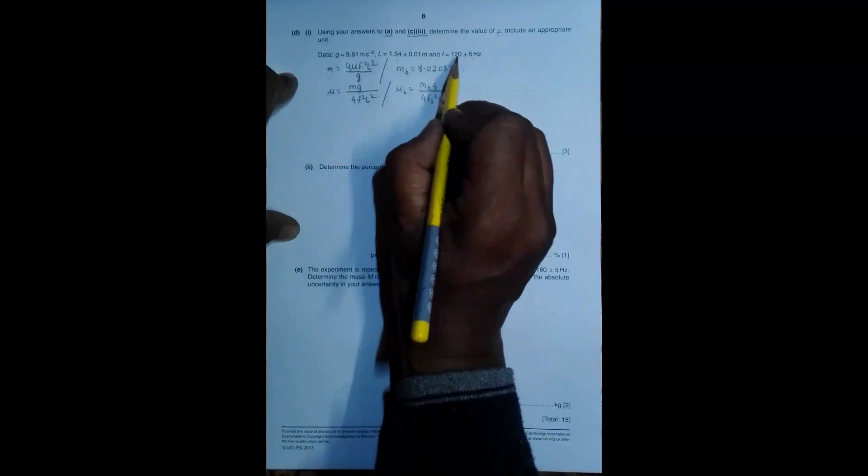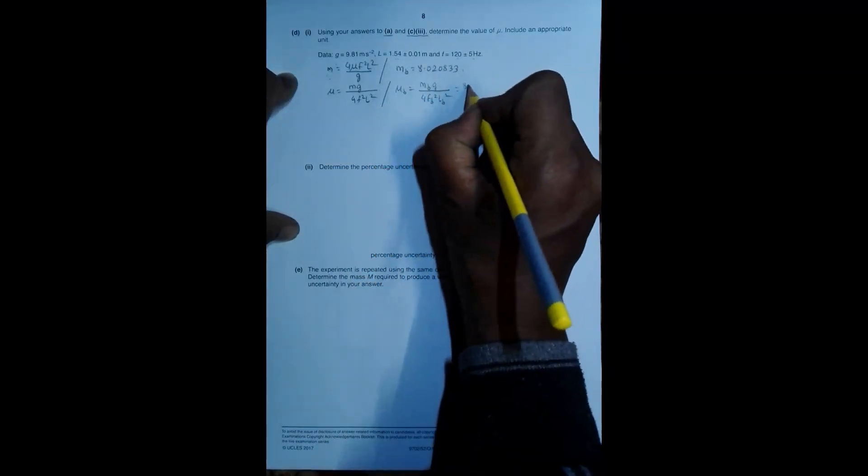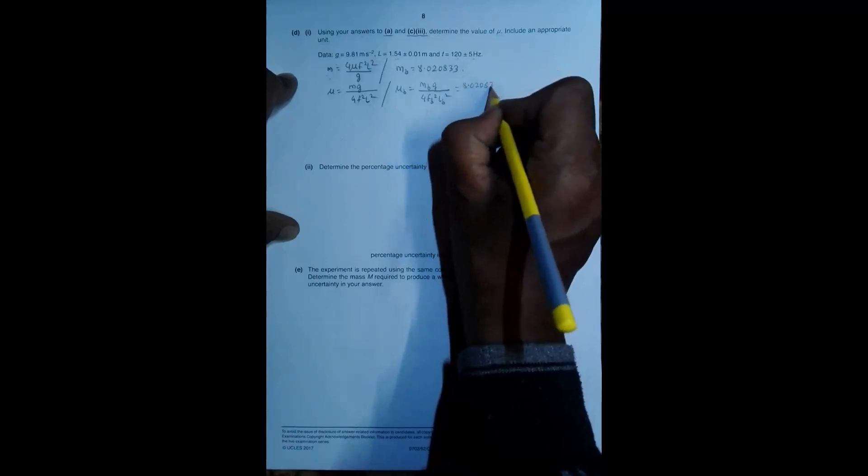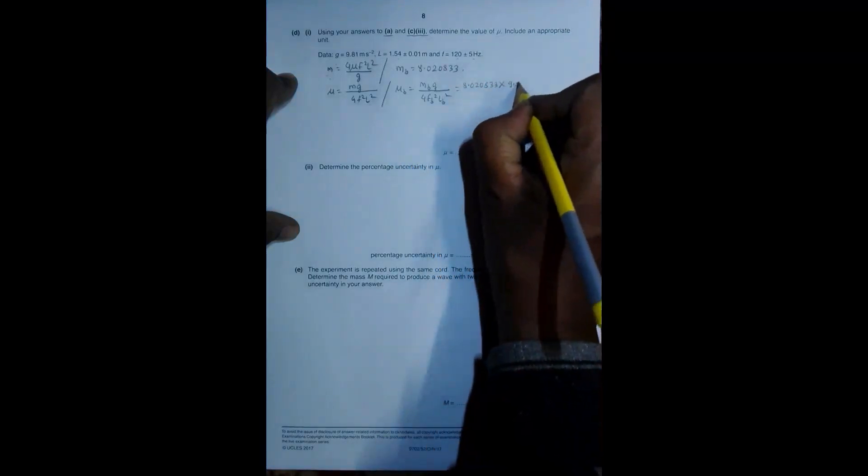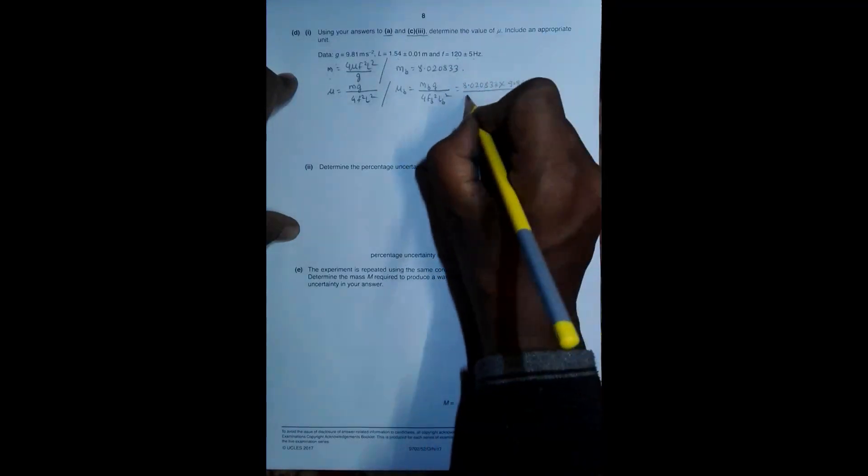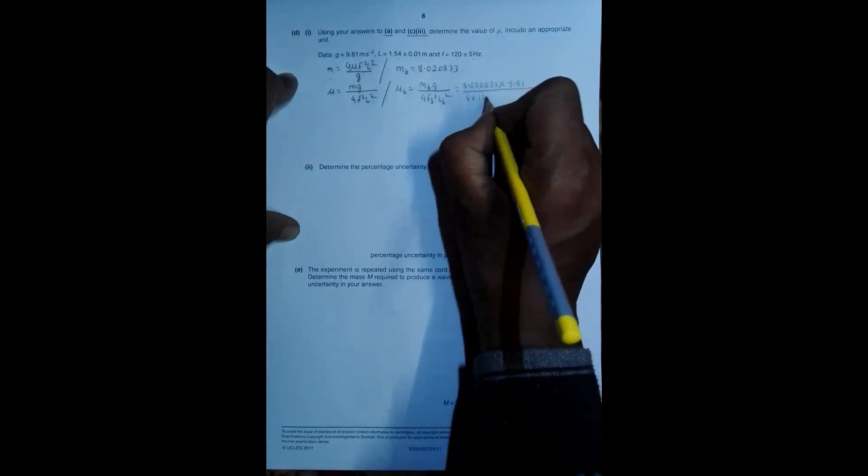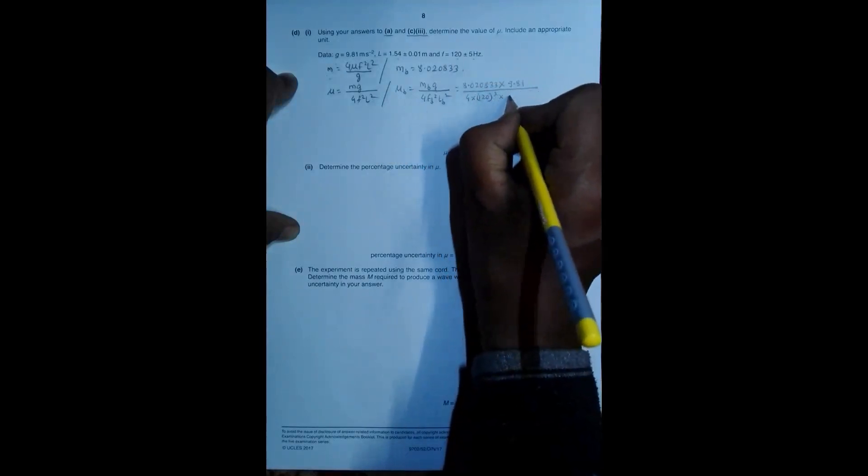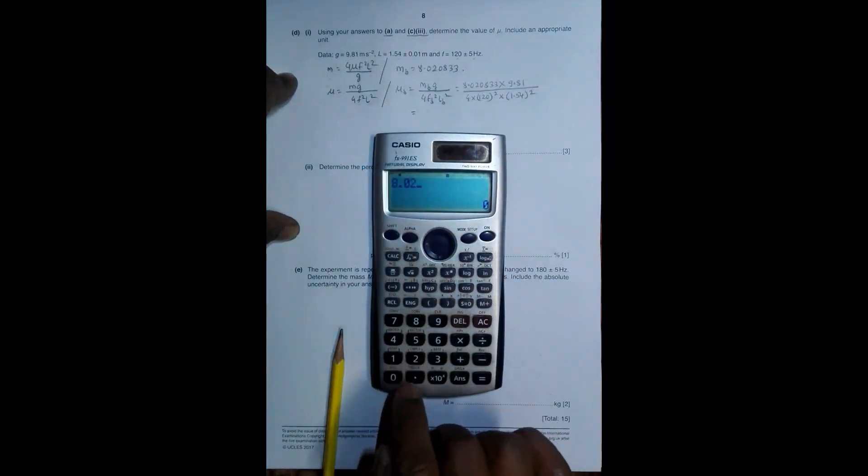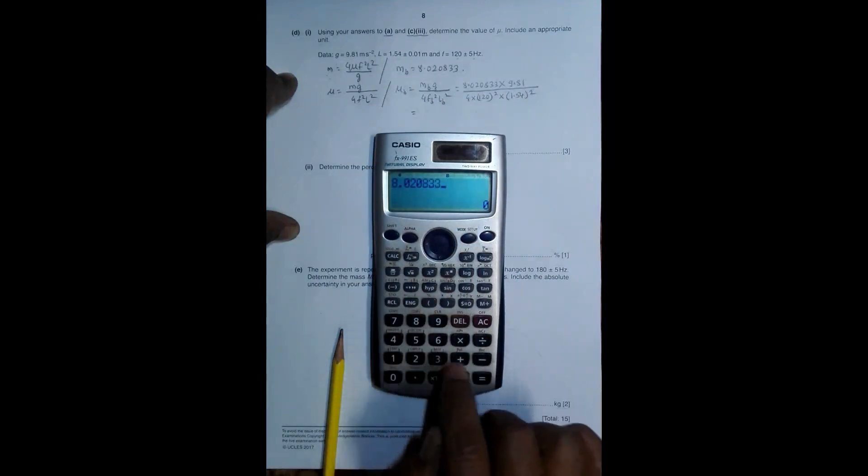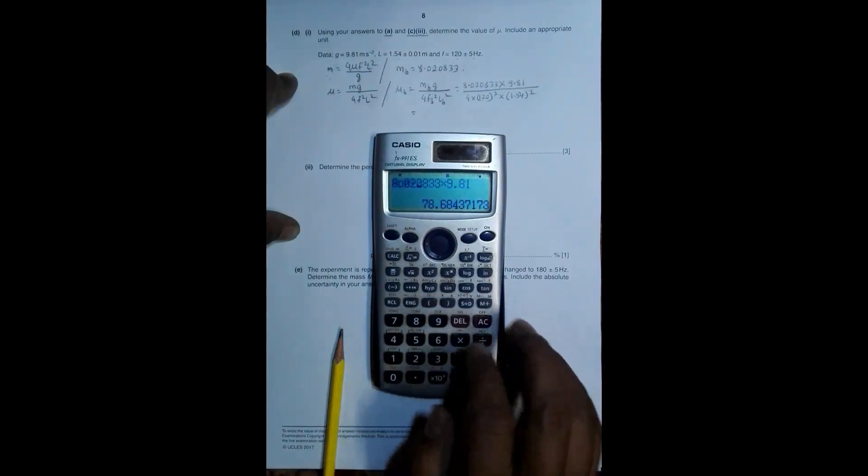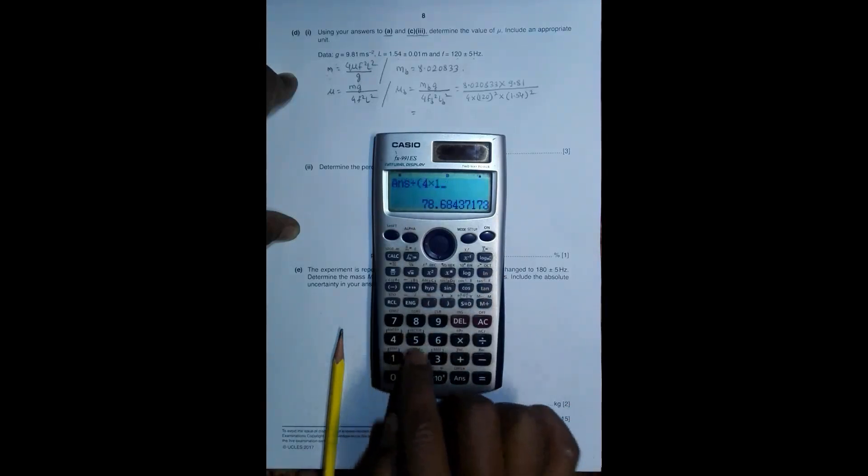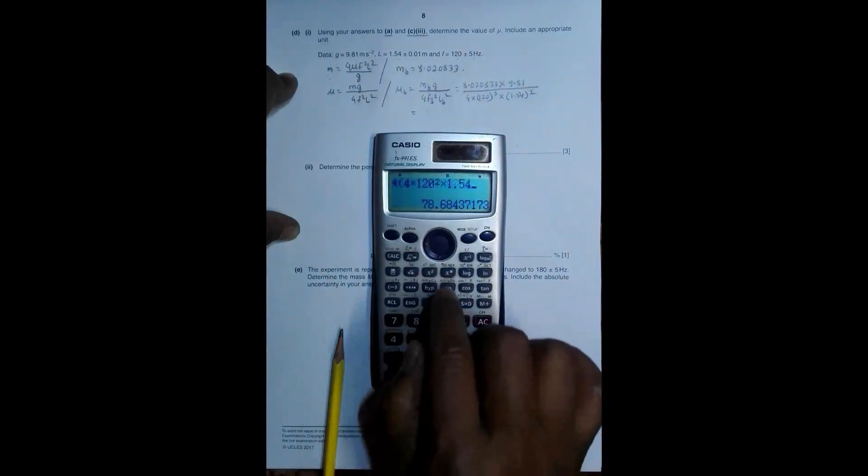Equal to M best is 8.020833 into 9.81 divided by 4 into F best is 120, 120 square into L best is 1.54, 1.54 square. So this will be equal to,